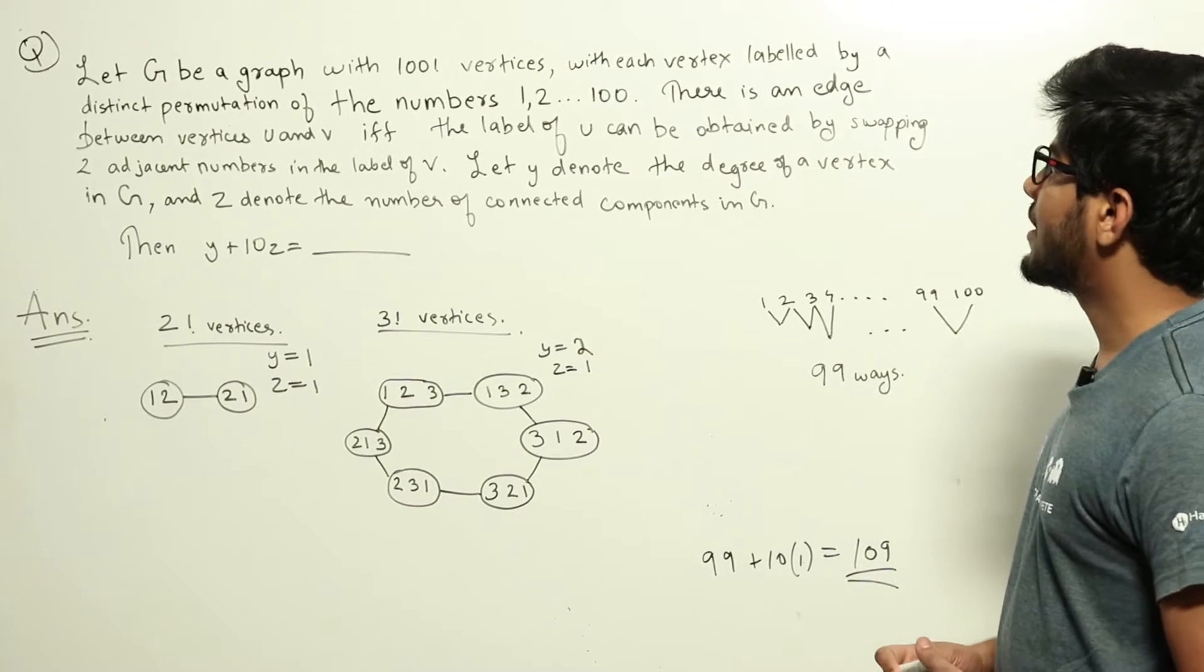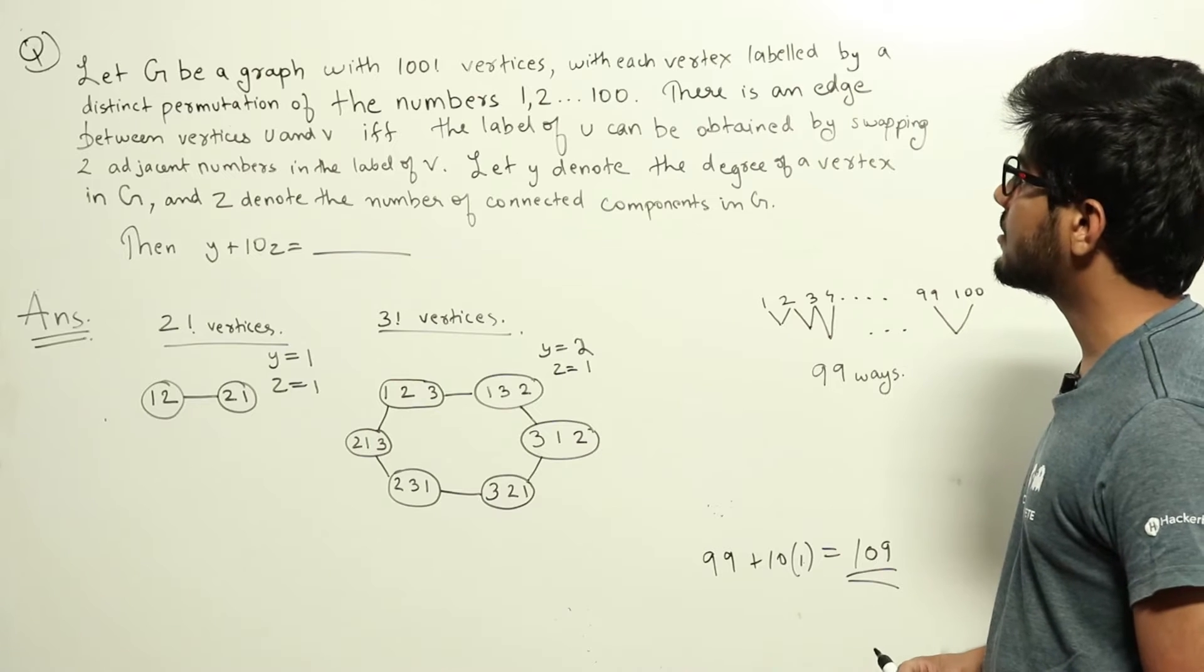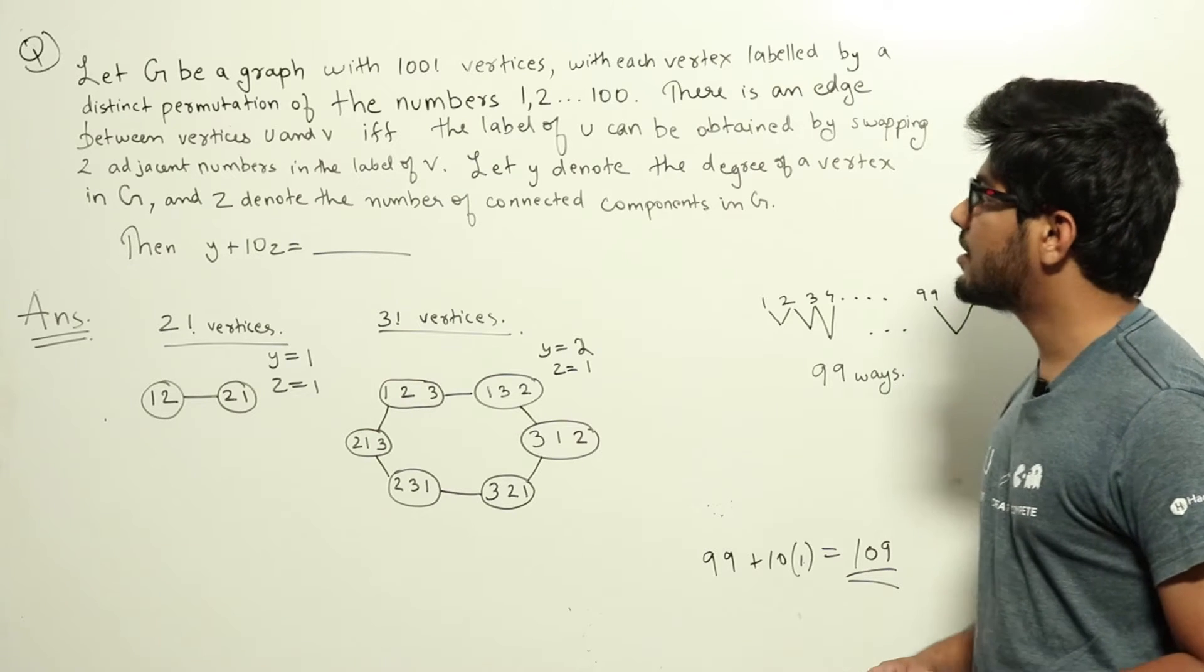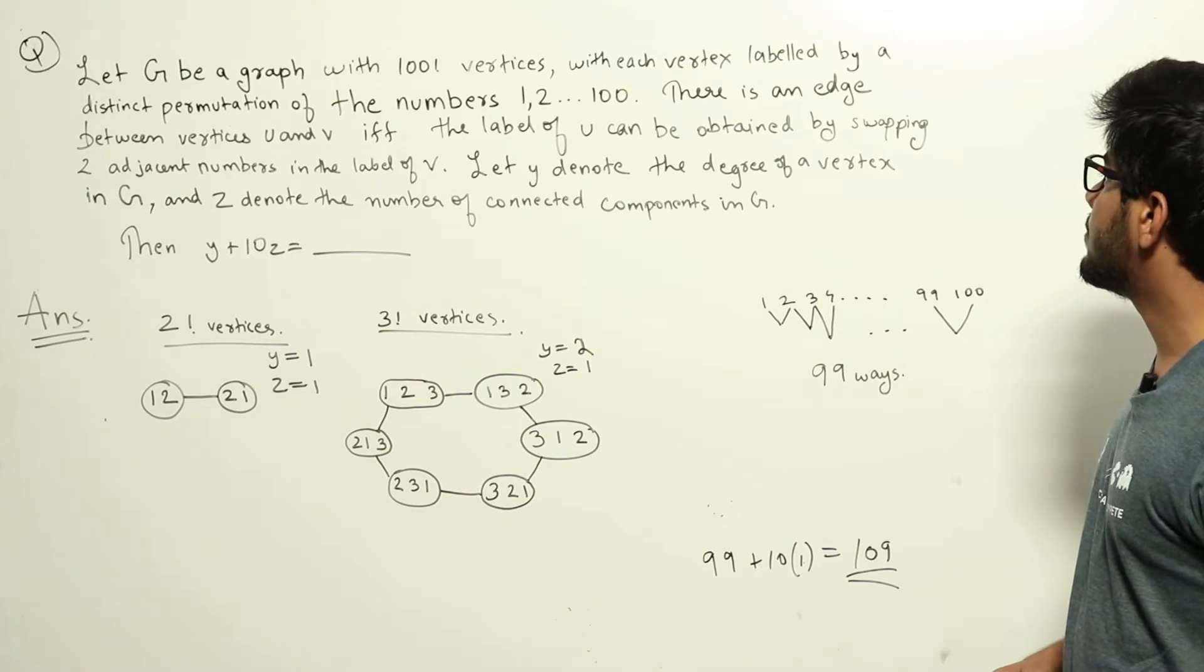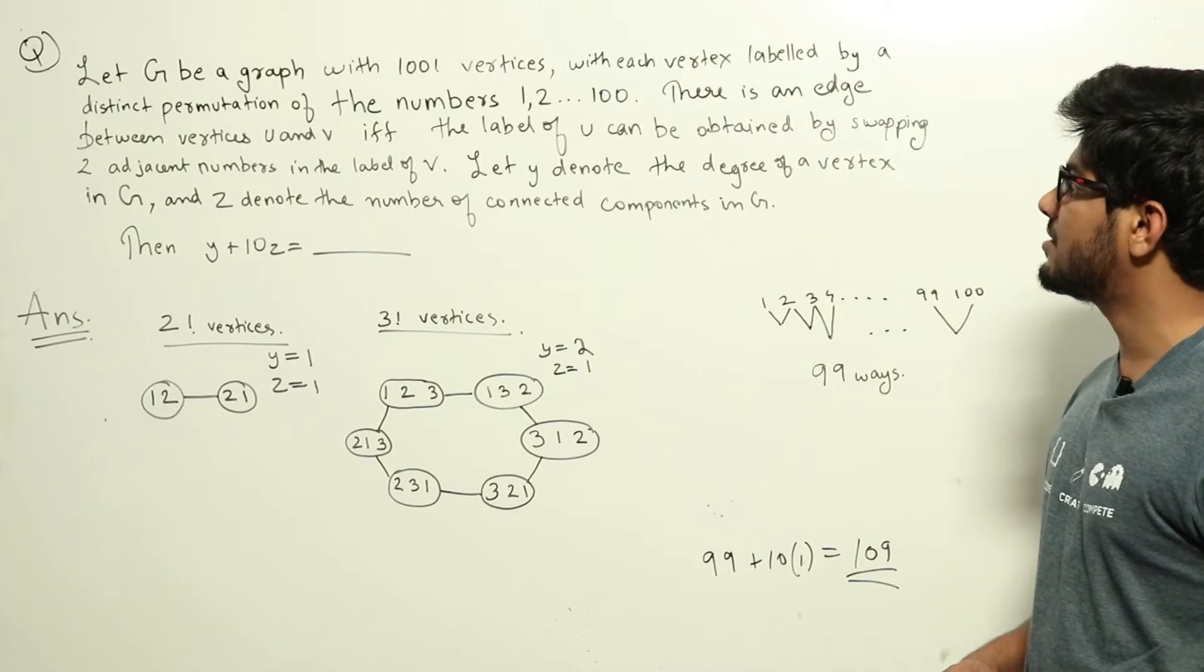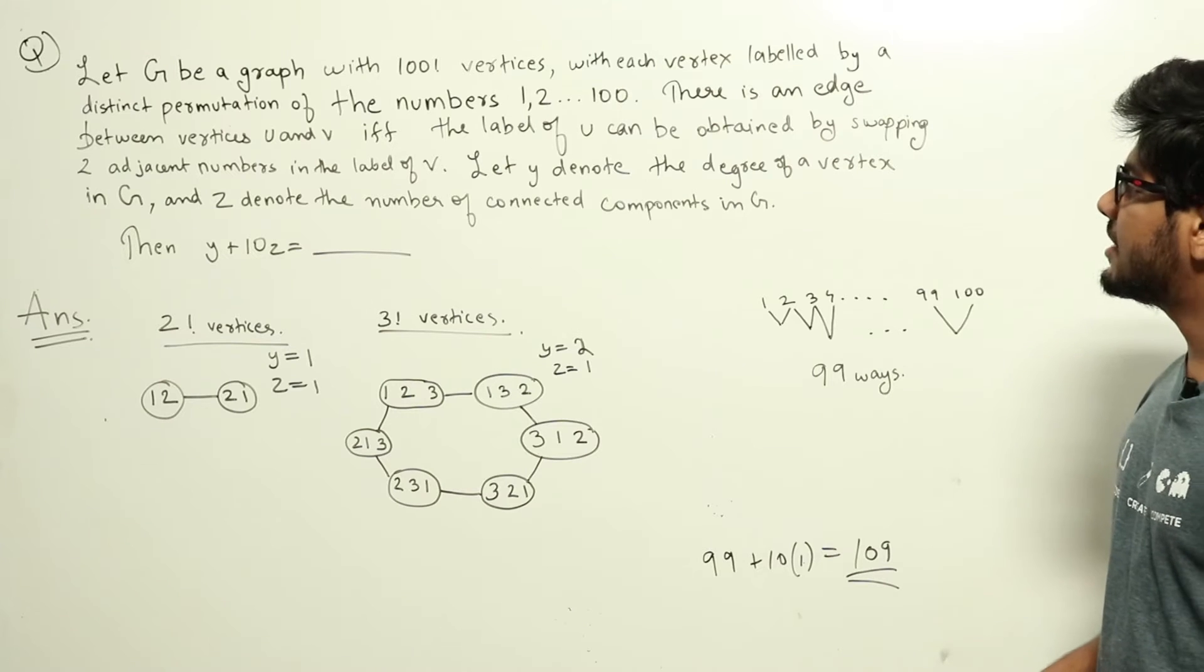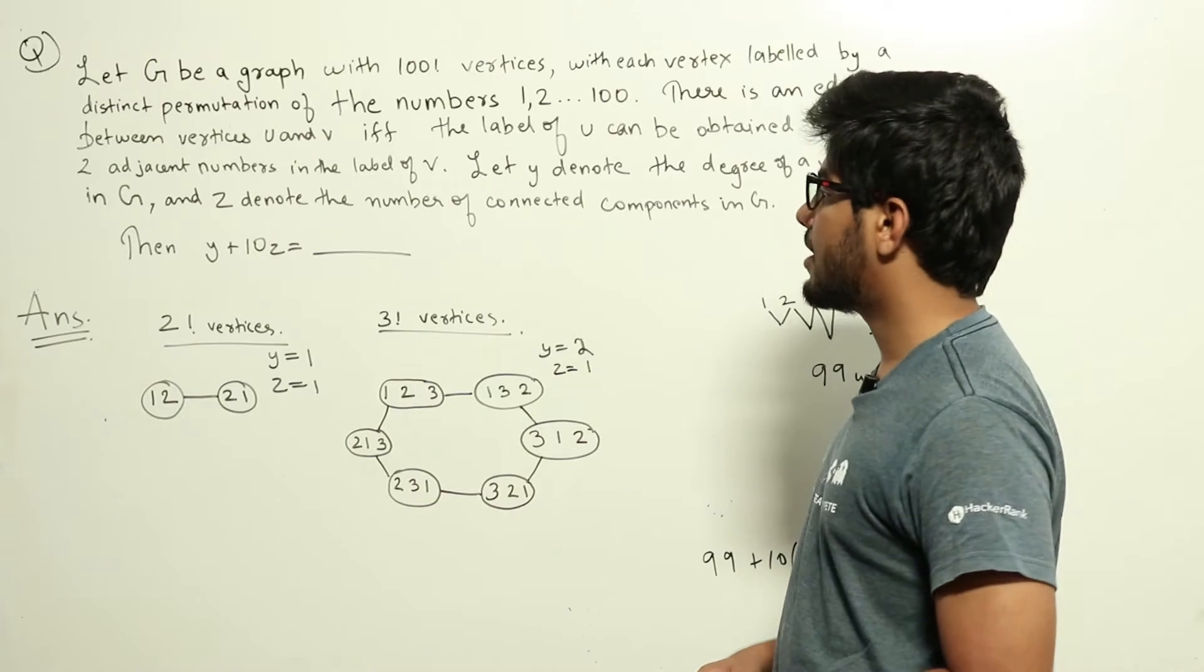Let G be a graph with 100 factorial vertices with each vertex labeled by a distinct permutation of the numbers 1, 2, up to 100. There is an edge between vertices u and v if and only if the label of u can be obtained by swapping two adjacent numbers in the label of v. Let y denote the degree of a vertex in G and z denote the number of connected components in G. Then y plus 10z equal to dash.